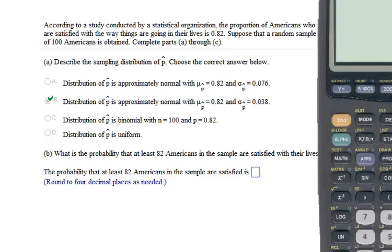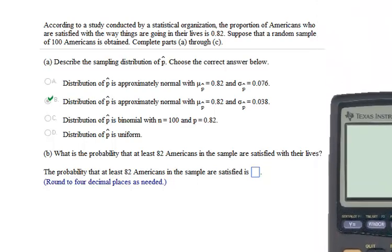According to the study conducted by a statistical organization, the proportion of Americans who are satisfied with the way things are going in their lives is 0.82. Suppose that a random sample of 100 Americans is obtained and completes parts A through C. So let's look at these first two parts.